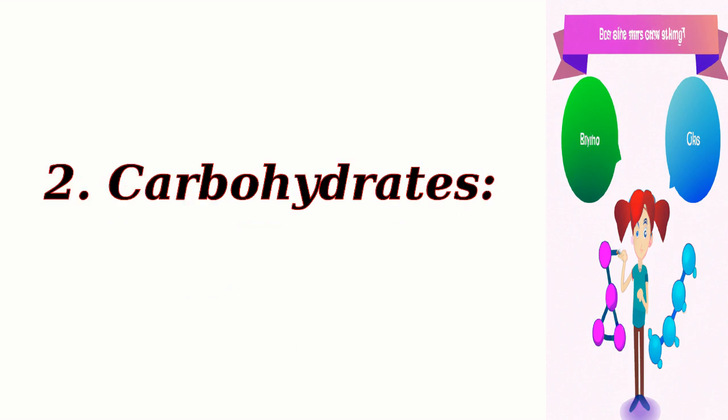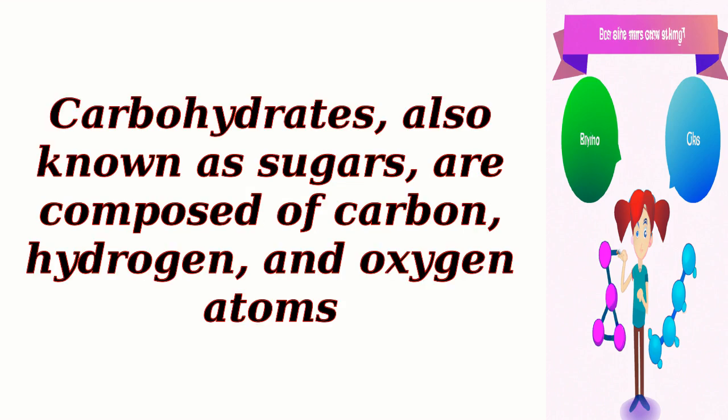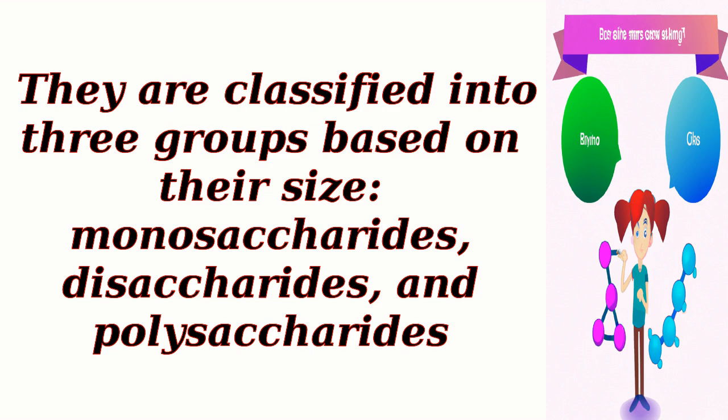2. Carbohydrates, also known as sugars, are composed of carbon, hydrogen, and oxygen atoms. They are classified into three groups based on their size: monosaccharides, disaccharides, and polysaccharides.